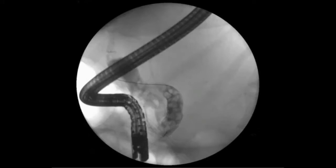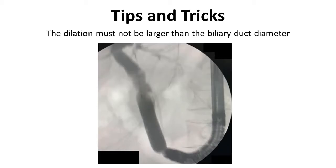In this video, we will discuss two cases involving balloon sphincteroplasty. The first one involves complex stone removal. In this picture, we see a dilated common bile duct with multiple biliary stones. It is important to understand that, to perform a safe procedure, the dilation must not be larger than the CBD diameter.